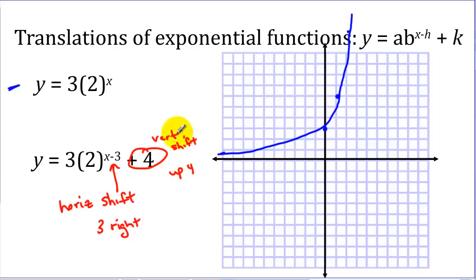So to sketch the graph, if we knew this graph, every point is going to go right 3. So this point is going to go right 3 and up 4. This point is going to go right 3, up 4.